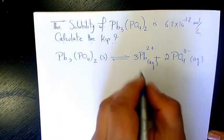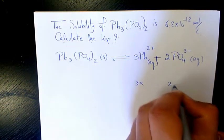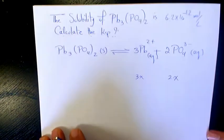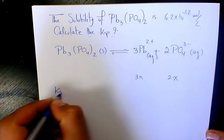The solubility is given. We're going to produce 3x of lead and 2x of phosphate, so the Ksp will be